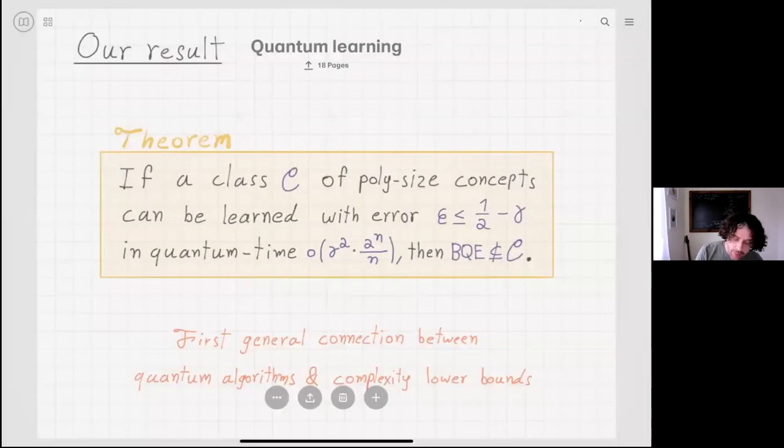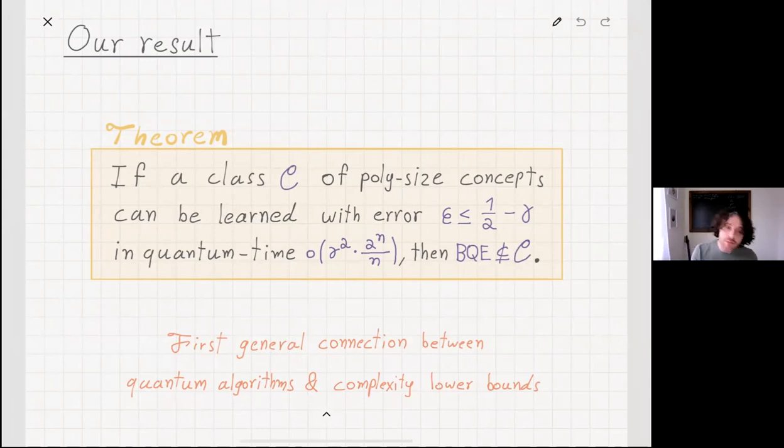To formally state the result, the main theorem shows that if a class C of polynomial size circuits can be learned with error L, which is at most half minus gamma, and think about it, you can always learn things trivially with error half, so you want to have this distinguishing advantage gamma, and we want to do it in quantum time which is little o of gamma squared two to the n over n, so just slightly better than this exponent, then BQE is not contained in C.